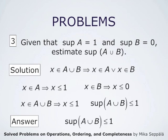We may also actually conclude that supremum of A union B is precisely 1, but that requires further justification, which we will describe later on.